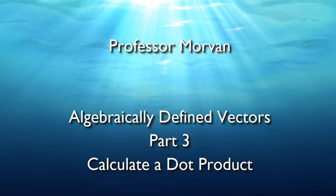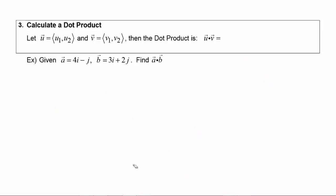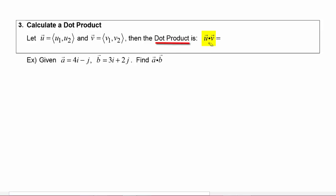In part three of our lesson on algebraically defined vectors, you will learn how to calculate a dot product. We will let vector u be the vector (u1, u2) and vector v be the vector (v1, v2). Then the dot product is vector u dotted with vector v — notice this is a big dot, bigger than the dot you would normally use for multiplication. The dot product of vector u with vector v is defined as u1 times v1 plus u2 times v2.